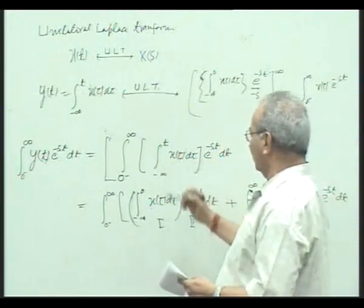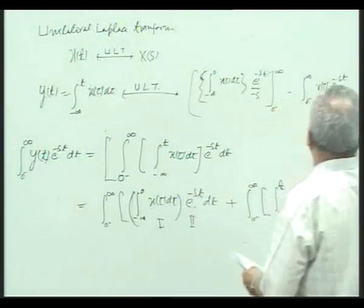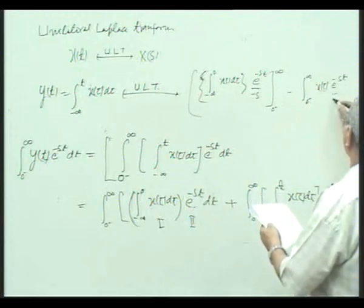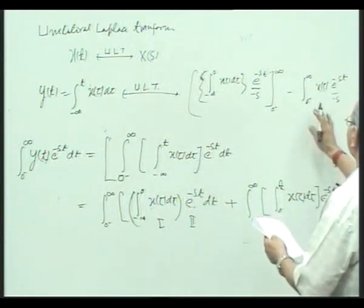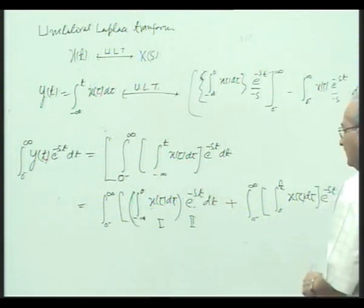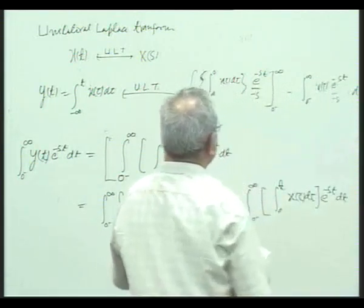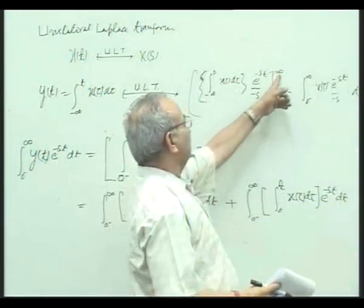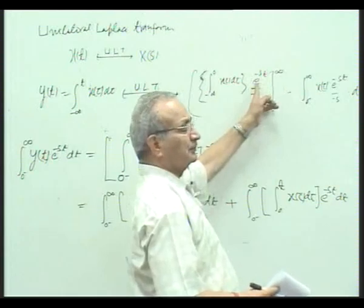The differential of this becomes simply x tau. x tau is for s·t minus s. Now, this could be indicated with respect to t. Let us consider this integral. Once this is evaluated at infinity, this term goes to zero.